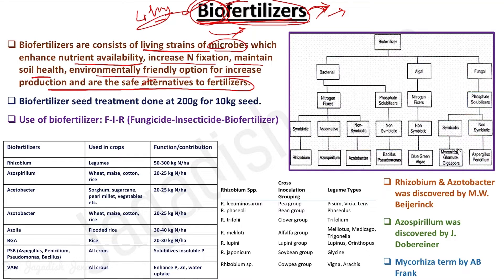Biofertilizer basically consists of microbial strains. In the substrate there are living organisms present which can either fix atmospheric nitrogen or solubilize already-fixed nutrients in the soil. There is a lot of nutrient dynamics and nutrient cycling going on in the soil, and these microbes take part in the availability of those nutrients. When recommending biofertilizer for seed treatment, 200 grams of biofertilizer is needed for 10 kg of seed. Biofertilizer is mostly marketed in 200-gram packets.